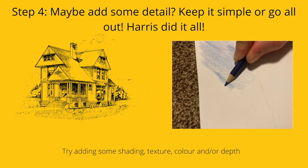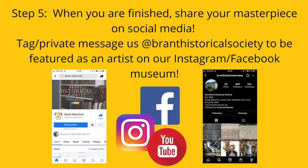For step three, it's time to start sketching your landscape. For step four, try adding some detail, or keep it simple, or go all out. If you do want to add more detail, try adding some shading, texture, color, or depth to the objects in your artwork.